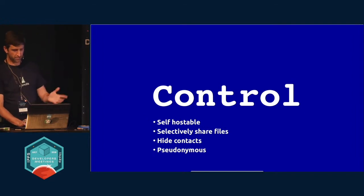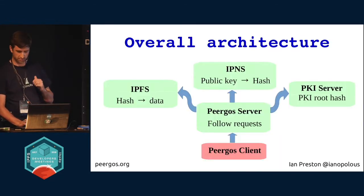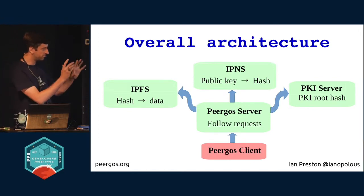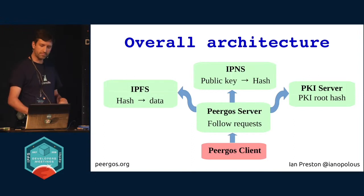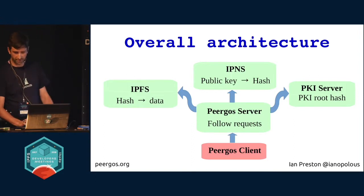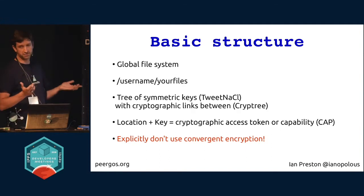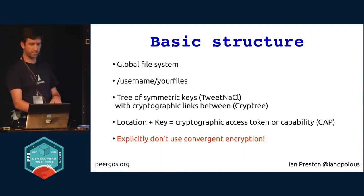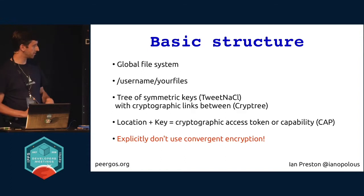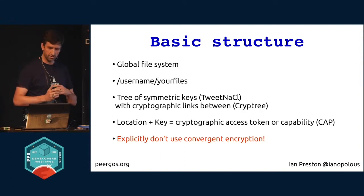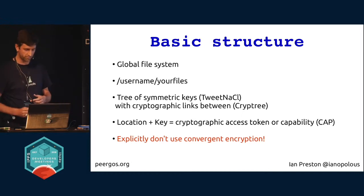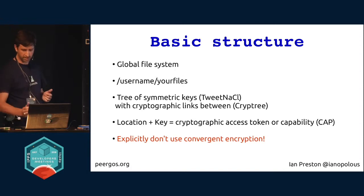Let's start with control. So: self-hostable, selectively sharing files, hiding contacts. This is our logical architecture. Basically all the data is in IPFS. We use IPNS, kind of. The structure is you have a global encrypted file system. Your space is under your username in the global namespace. Each person has a tree of symmetric keys which controls access to files. That's called Cryptree — there's a paper you can read. So you end up with a location plus a key as your cryptographic capability.